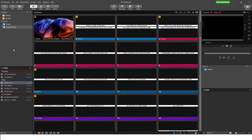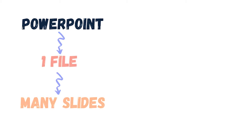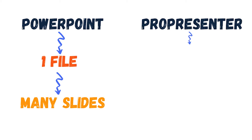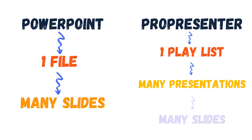To get our heads around how this works, we need to think a little bit differently to the way we're used to. Normally in PowerPoint, if we have an event or a church service coming up, we'd create a PowerPoint file and add all of the slides into it — ending up with one file with lots of slides. In ProPresenter, instead of having one file with all our slides, we create one playlist with lots of presentations, and each presentation contains some slides.